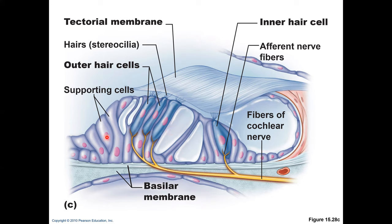In a magnified view of the organ of Corti, you can see the basilar membrane, supporting cells, tectorial membrane, and hair cells. Bending of the hair cells — especially the inner hair cells — causes chemical changes, which lead to electrical changes, and finally an electrical impulse travels through the cochlear nerve to your brain.